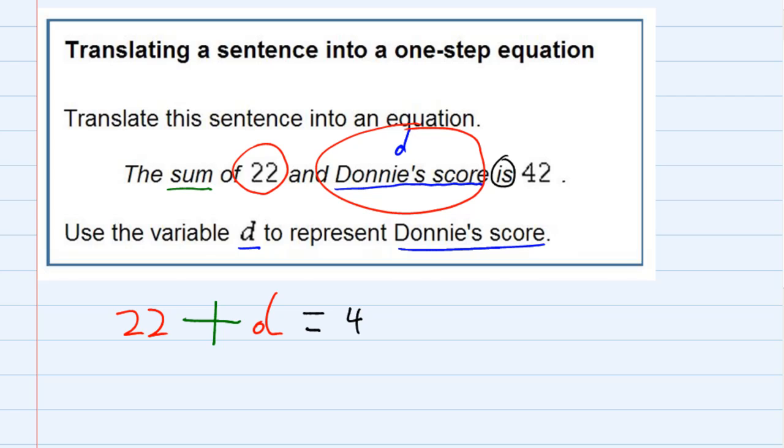And then the right-hand side is 42. So you can see that we have here the sum of 22 and Donnie's score is 42. And that's our equation.